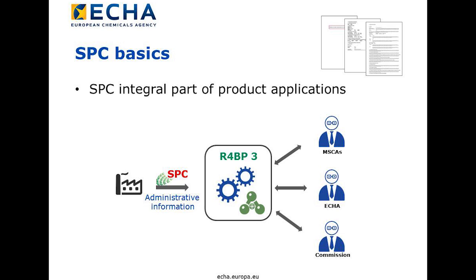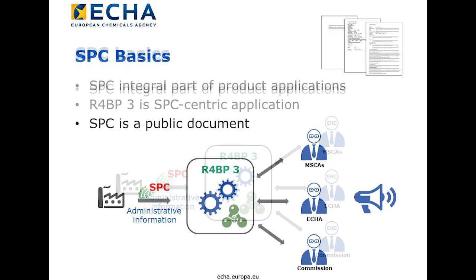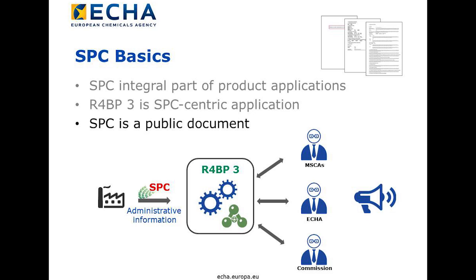Incorrect SPC data can result in invalid assets with negative consequences for the applicant and the authorization holder. Most importantly, the SPC is a public document. ECAS dissemination data will be based on SPC information. That means that the final SPC cannot contain confidential data.